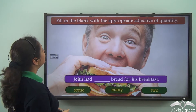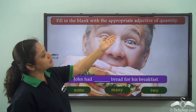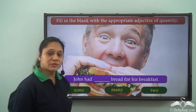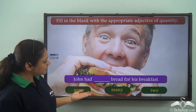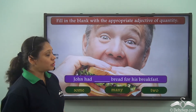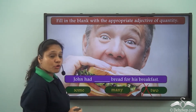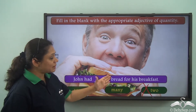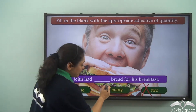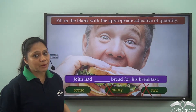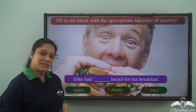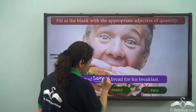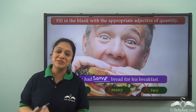Now let us do this exercise. Fill in the blank with the appropriate adjective of quantity: John had ___ bread for his breakfast. The options are: some, many, two. We cannot use 'two' as an adjective of quantity because it is a definite number. Can we say 'John had many bread'? We know that 'many' is also used as an adjective of number — we cannot use it as an adjective of quantity. So the correct answer is: John had some bread for his breakfast.